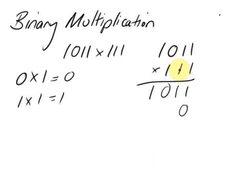We're now going to multiply again by this: 1 times 1 is 1, 1 times 1 is 1, 1 times 0 is 0, 1 times 1 is 1.